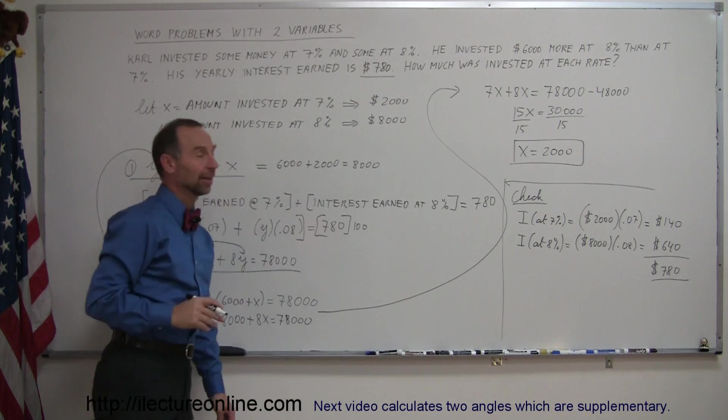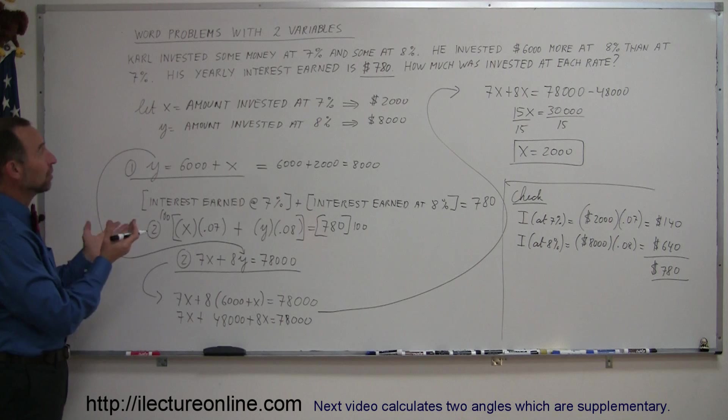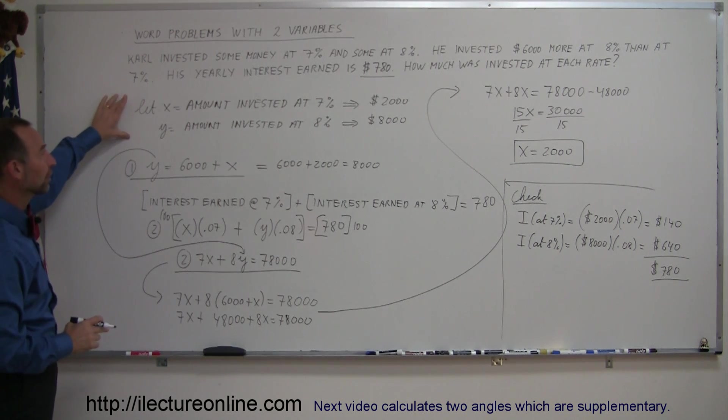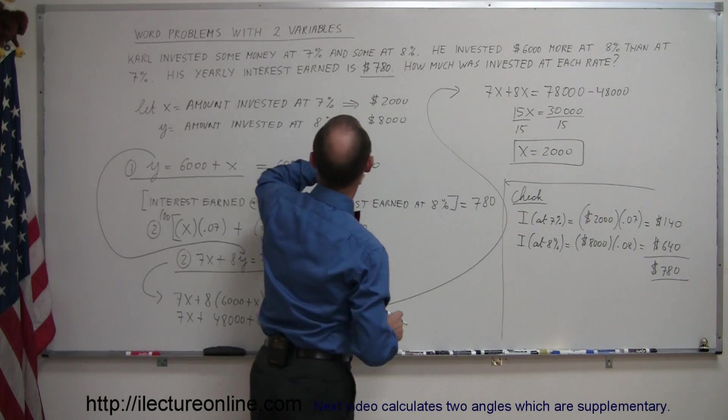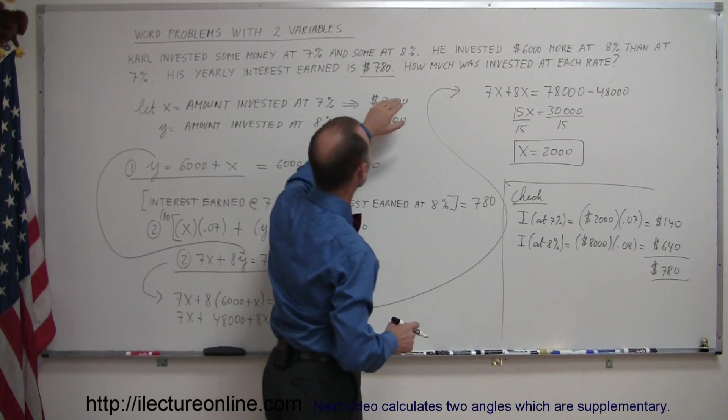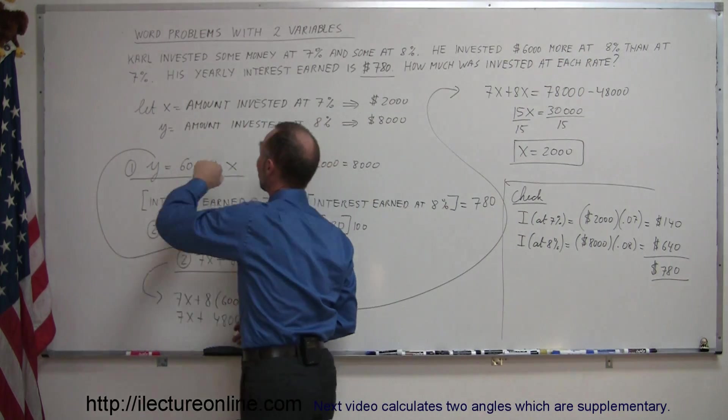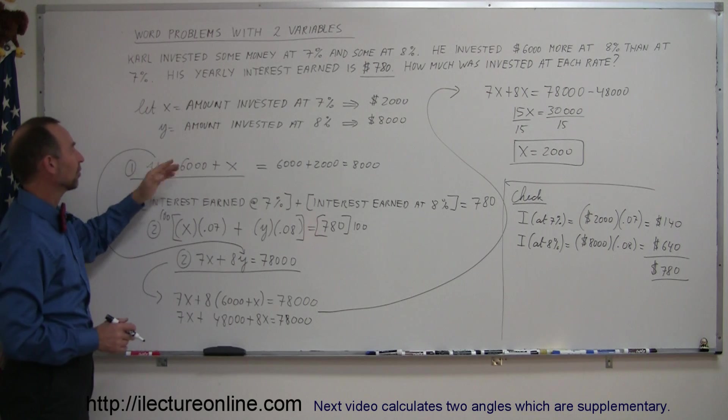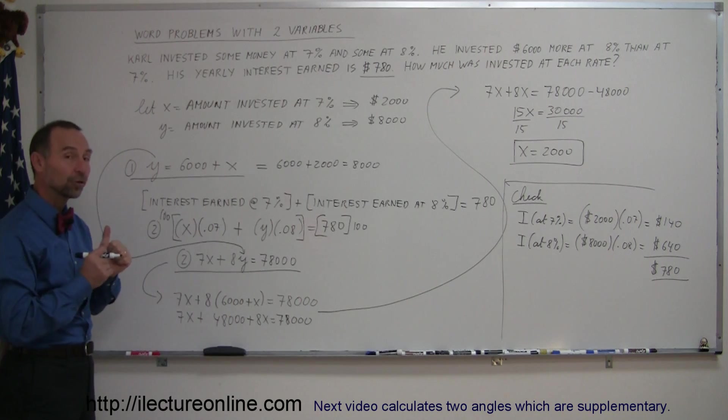It's the same amount, so I just checked and made sure that I got the problem right. So, quick recap: you have a problem that you need to solve using two variables, so you first define your two variables very carefully. Then you need two equations. You go through the problem and find information. It says here that the person invested $6,000 more at 8% than at 7%, so we write that equation down here. y, which is the amount invested at 8%, is $6,000 more than what we invested at 7%. That's our first equation.